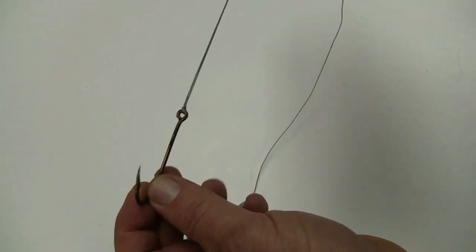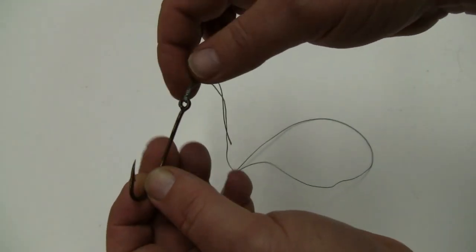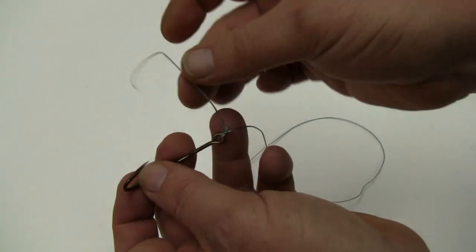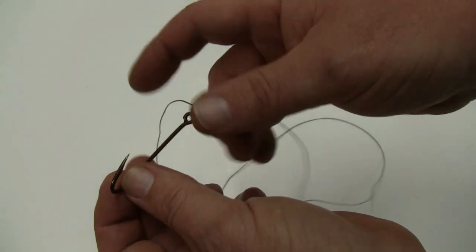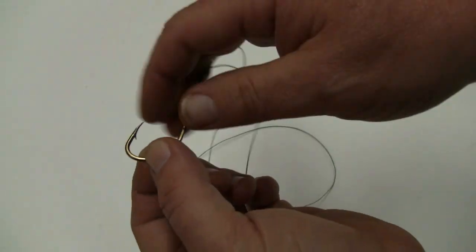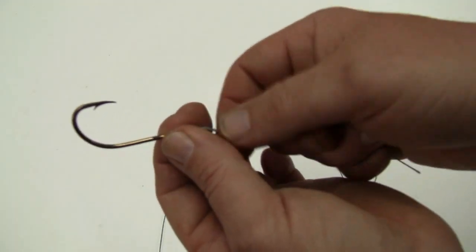There you go, super simple knot to tie. When I trim these tag ends, I usually trim them half to three quarter inches long because it doesn't really affect how the fish are going to bite. It's super strong.